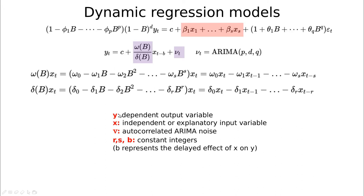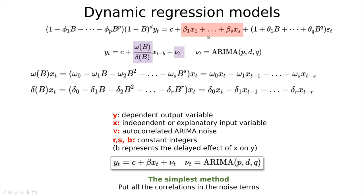To summarize: y is the dependent output variable, and delta with index r controls how many past points affect y. x is the independent input variable, and parameter s gives how many lags of x affect the future value of y. The parameter nu contains the ARIMA(p,d,q) coefficients. We can also start at a different lag — we don't require the first lag value to be zero; we can shift the time parameter. This is the most general model. We'll start with something simpler: basic linear regression but with ARIMA-correlated noise instead of uncorrelated noise.